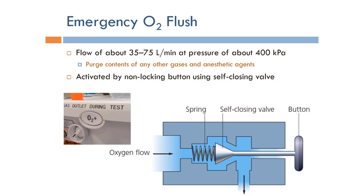It is very important to note that the emergency oxygen flush should never be used when the patient has the breathing circuit connected to them, because it can actually cause barotrauma — damage to the lungs — because the pressure is much higher than what the human body can tolerate.